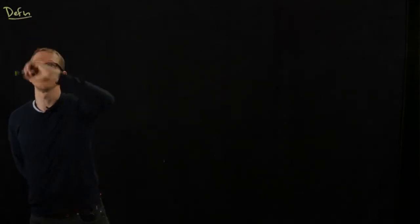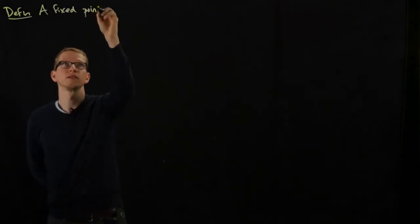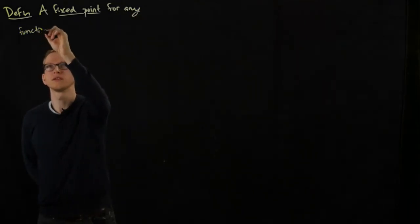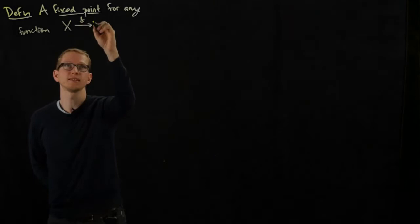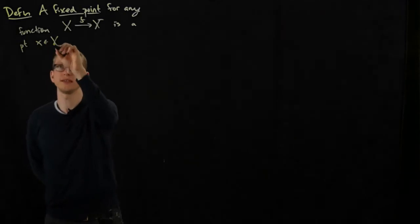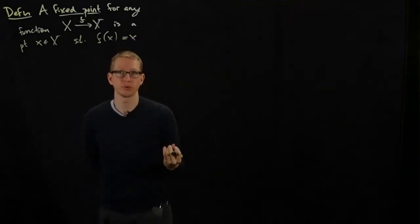As we've seen, there are plenty of examples of metric spaces and different types of functions between them. Some particular functions from a metric space to itself actually always have fixed points. For example, let's write down the definition of a fixed point. A fixed point, for any function from a set to itself, is just an element of that set satisfying the condition that if I apply the function f to it, I get back where I started.